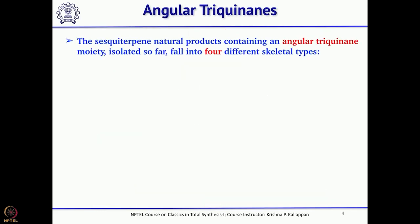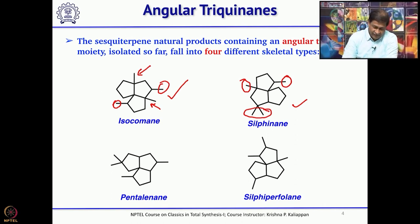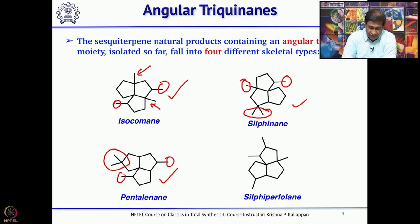Coming to angular triquinines, skeleton-wise there are 4 types. For isocomane-type angular triquinines, there are 4 methyl groups — 2 are angular methyl groups and 2 are attached to a tertiary carbon atom. In the case of silphenene, there is 1 angular methyl group, 1 methyl group attached to a tertiary carbon atom, and 2 methyl groups that are gem-dimethyl and quaternary. For pentalenane, there are 2 quaternary methyl groups and 2 methyl groups attached to tertiary carbon atoms.